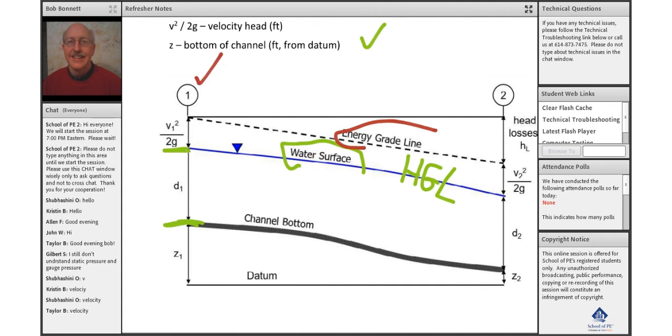if we were to list this out as an EGL and HGL condition, you're going to have greater energy at point one, and because as this fluid flows through the open channel, it's going to lose energy, and you're going to have less energy at position two.